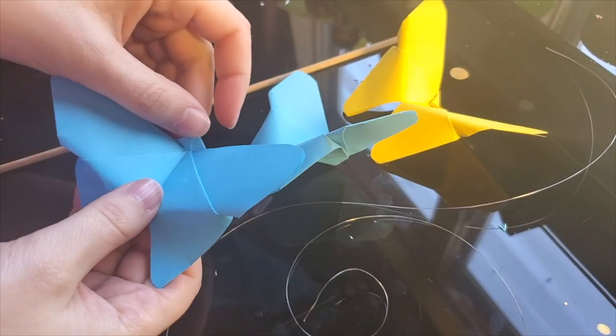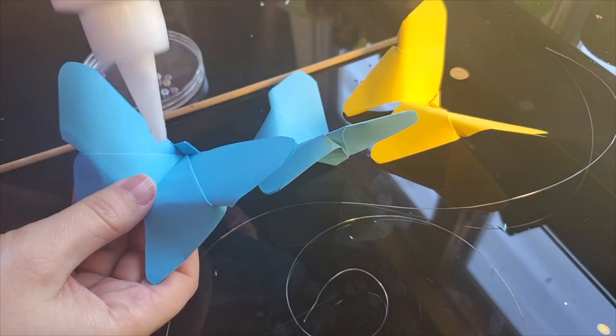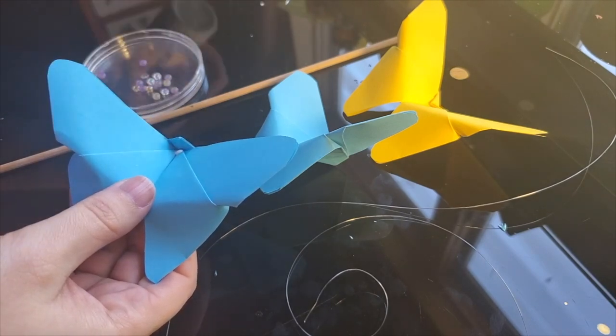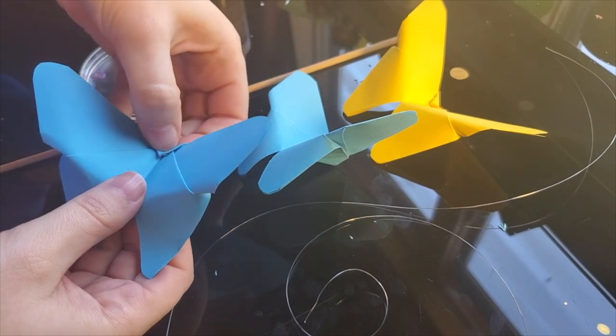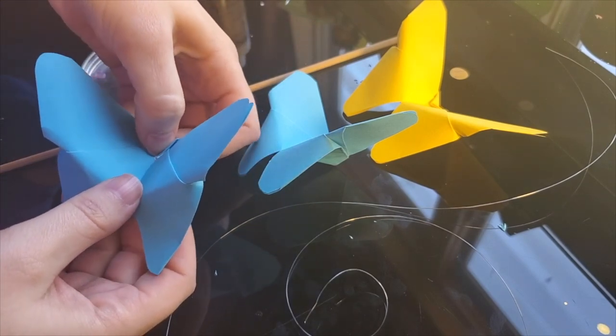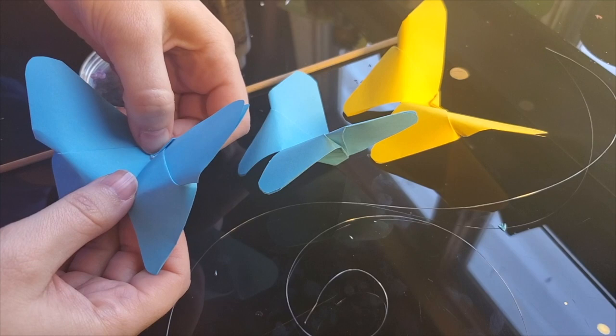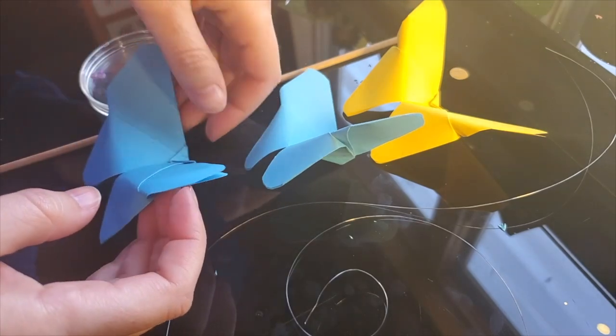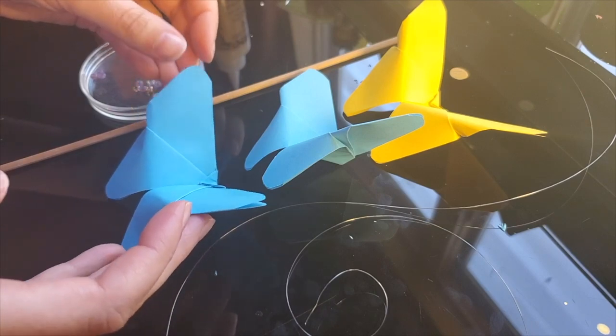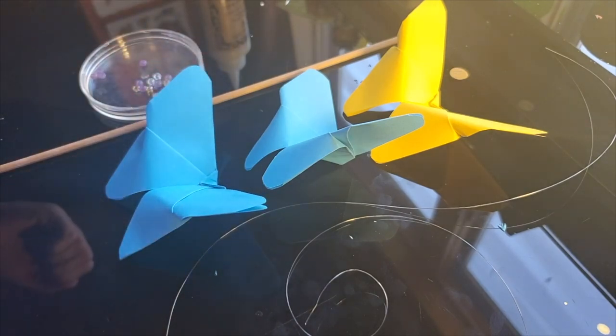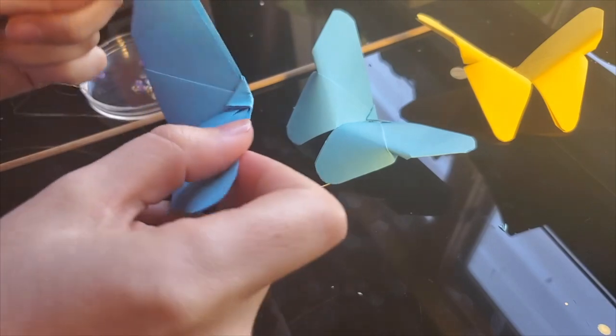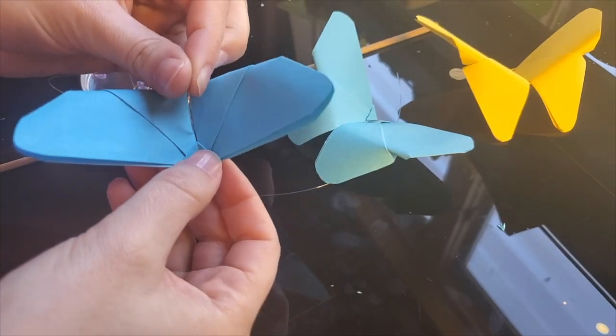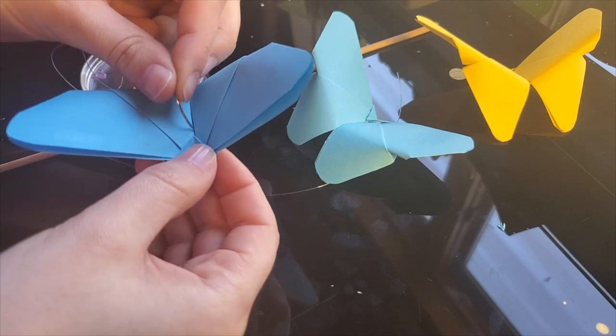Glue or tape the tab of each butterfly to secure them. Once dry, use a needle to punch a hole a small ways down from the tip of the folded tab, almost at the center, but not quite.